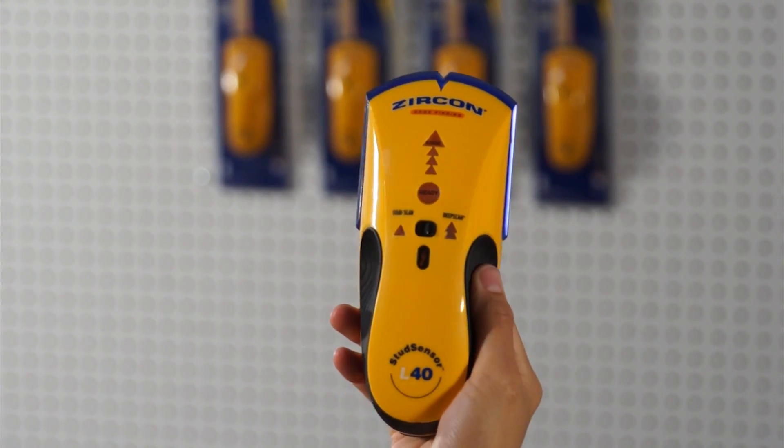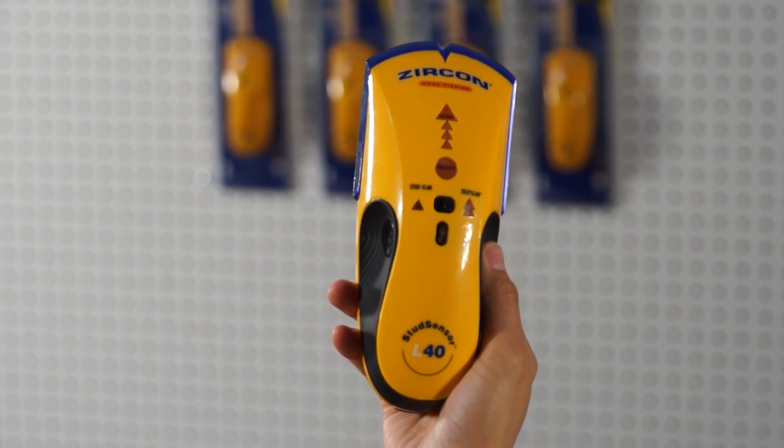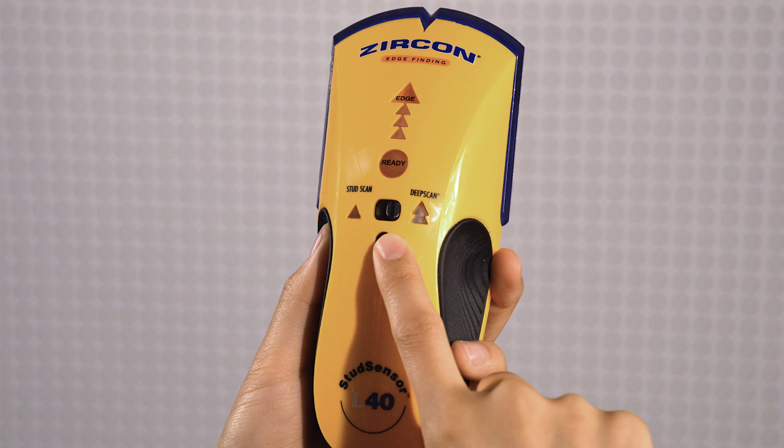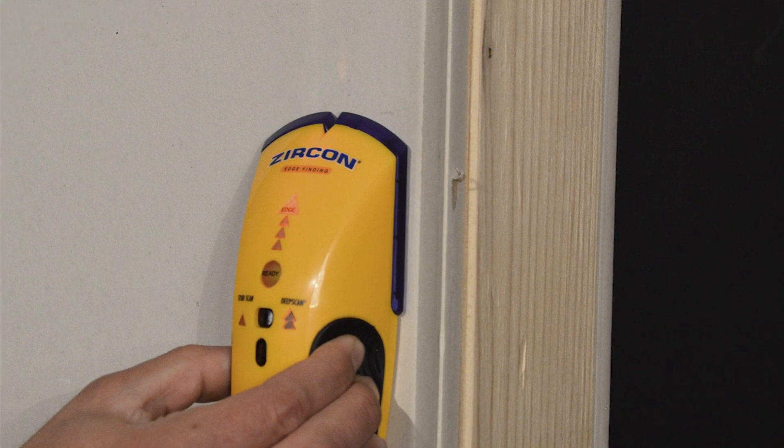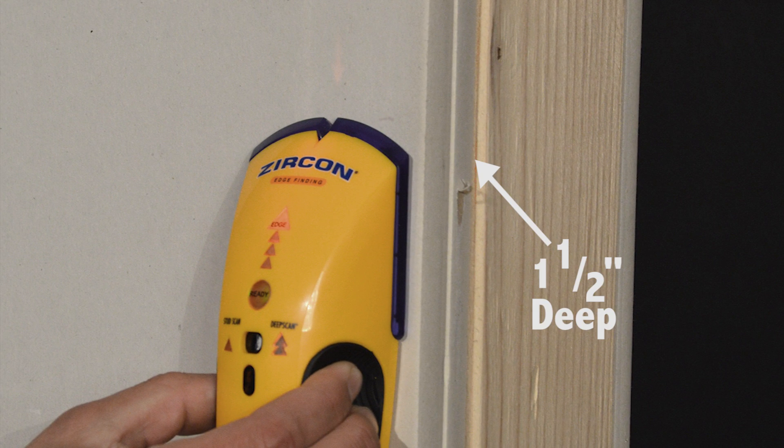Get your project done right with the Zircon StudSensor L40 stud finder. The L40 has two modes, stud scan mode to find the edges of studs up to three quarters of an inch deep, and deep scan mode to find the edges of studs up to one and a half inches deep.